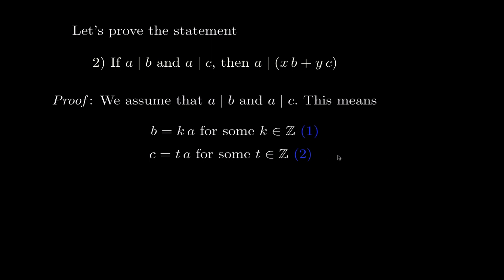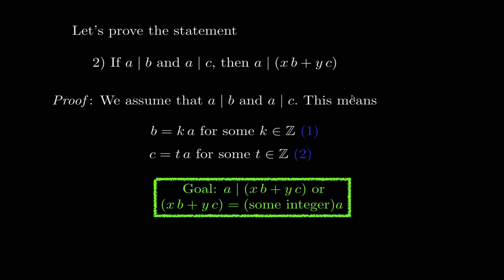Whenever you do this type of proof, you want to write down your goal clearly. Our goal is to prove that a divides xb plus yc. Rewriting that goal using the definition: we need to show that xb plus yc equals some integer times a. If we can achieve this from statements 1 and 2, we will have proved what we want.